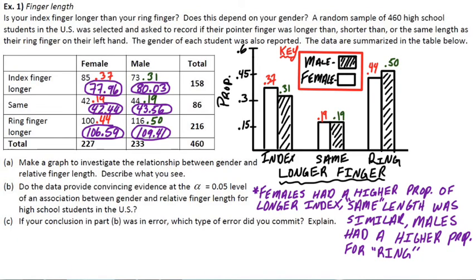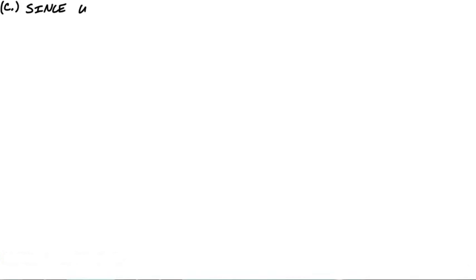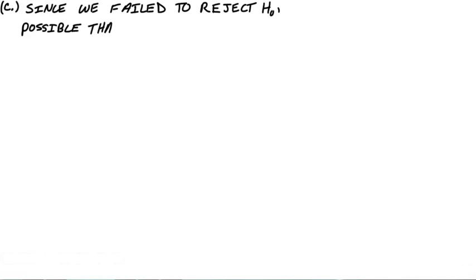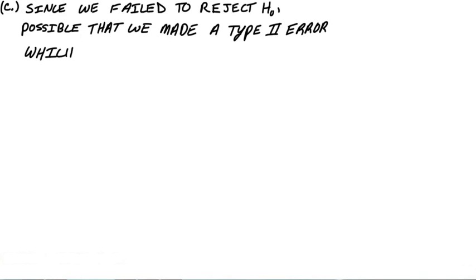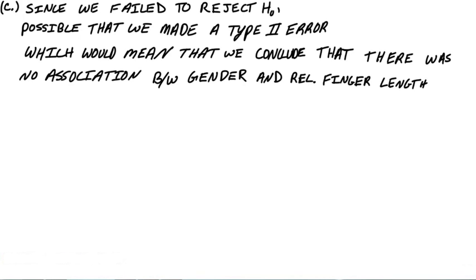Part C asks: if your conclusion in part B was an error, which type of error did you commit? Since we failed to reject the null hypothesis, it's possible that we made a type 2 error — fail to reject means type 2. We can say: since we failed to reject the null, it's possible we made a type 2 error, which in context would mean we concluded there was no association between gender and relative finger length when there actually was an association.